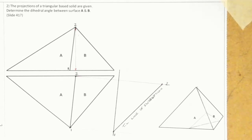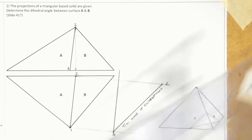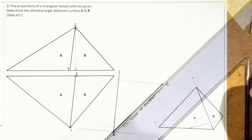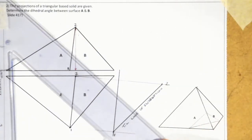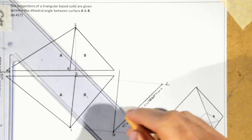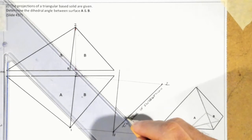A way of using the rebatment method to locate the dihedral angle is by doing a perpendicular cutting plane to the line of intersection. To do a perpendicular cutting plane, it doesn't matter where it goes through. I'm going to set up my 45-degree set square on the line of intersection and rotate it so that I have a perpendicular angle to it. It does not matter where — I'll just move it in a little bit further.